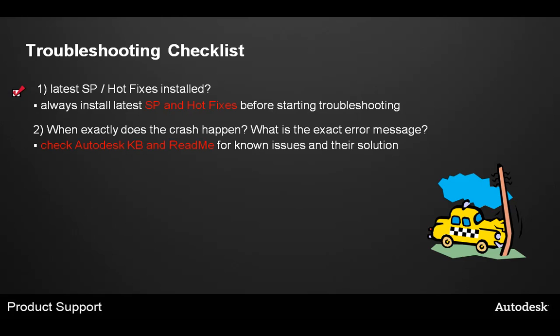The next thing on our checklist is to document and know when exactly your crash is happening and what the exact error message is. Often times when you have this information, you can go to the Autodesk knowledge base on the Autodesk.com website, or refer to the README for your products to know about known issues and potential solutions or workarounds. An example is you may get a fatal error message — some sort of number, unhandled access violation. Screen captures are recommended for these so that when you log a support request we have that exact error message.